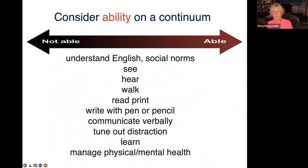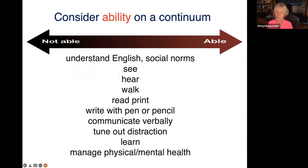For most of us not working in the disability services office, we don't need to know all the definitions of disability. I think it's easier to think about ability on a continuum — everyone has abilities in certain categories, and we may not have a disability, but we all exist somewhere on that spectrum. So there's a double-edged arrow from not able to able, with a list of abilities. For example, the ability to understand English — someone might rate themselves lower in this category because English isn't their first language, or because they have a learning disability. The point is that a particular ability level can exist for multiple reasons.